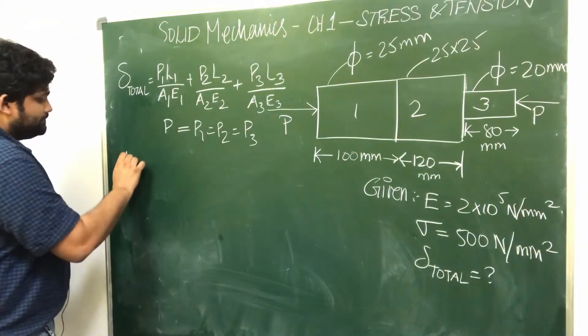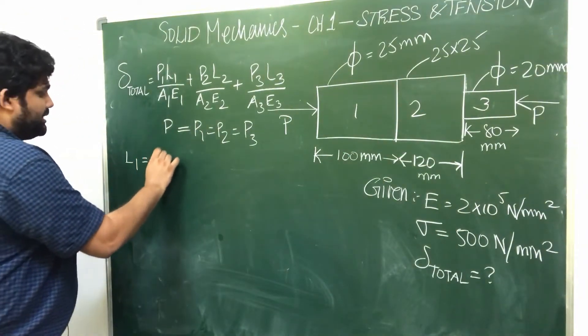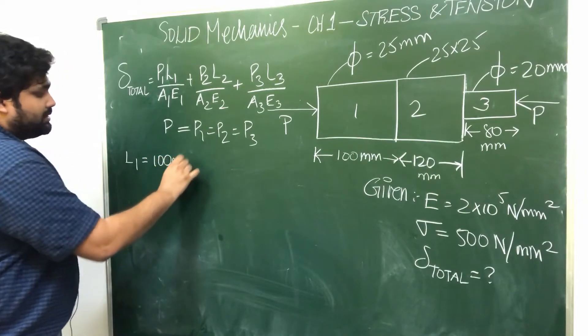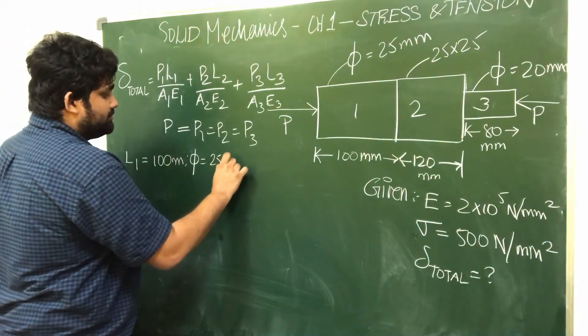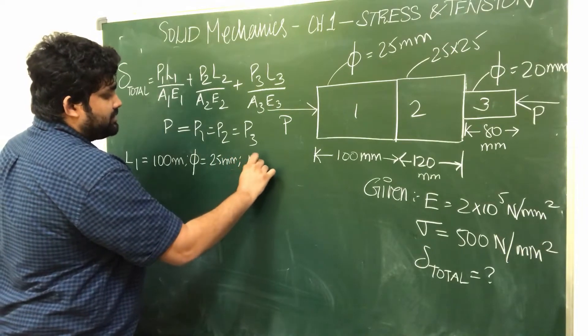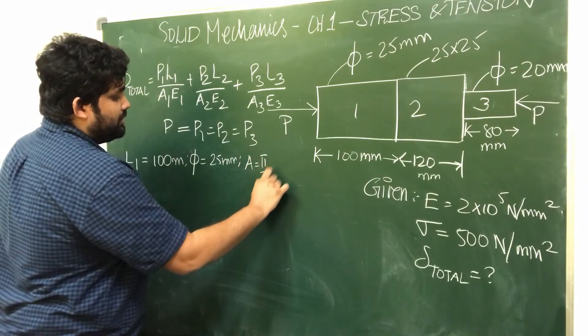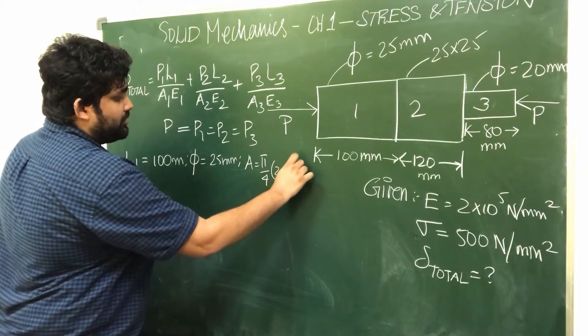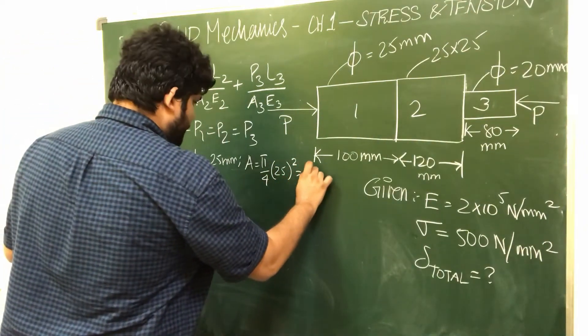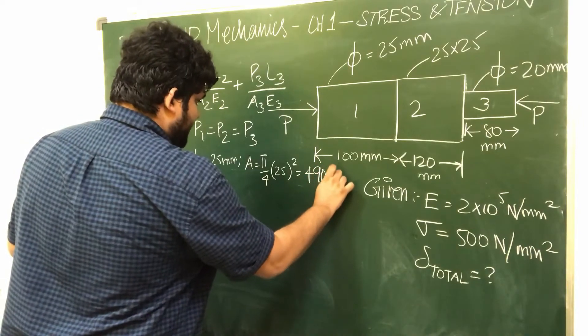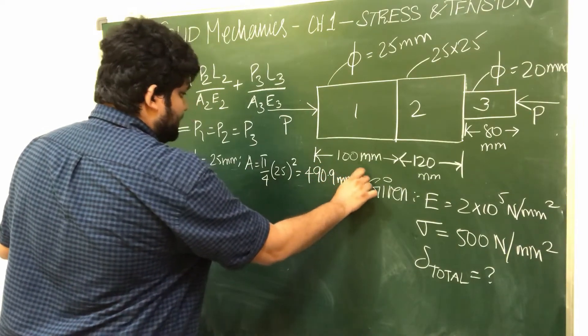Bar 1: length 100 mm, diameter 25 mm. Area of cross section is nothing but π by 4 times 25 mm whole square, so this value is 490.9 mm^2.